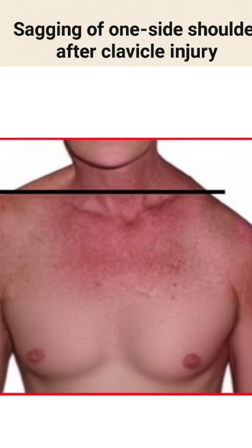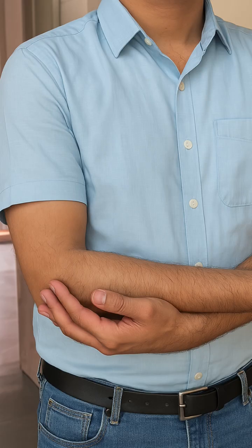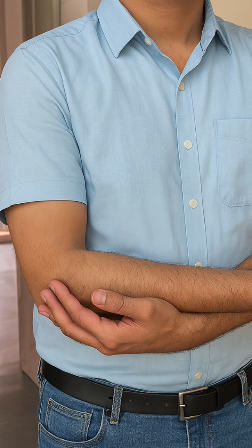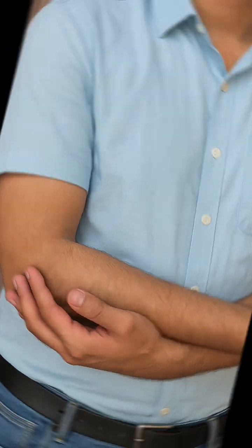Clinically, you will see the shoulder sagging and the patient holding the arm in a protective posture, known as a self-sling or guarded position, which immobilizes the injured arm after the fracture.